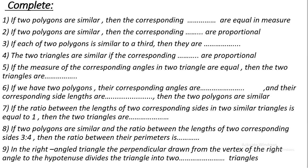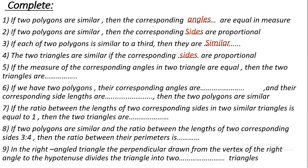Now we have some completion questions. Number one: if two polygons are similar, then the corresponding angles are equal in measure. Number two: if two polygons are similar, then the corresponding sides are proportional. Number three: if each of two polygons is similar to a third, then they are similar. Number four: two triangles are similar if the corresponding sides are proportional.